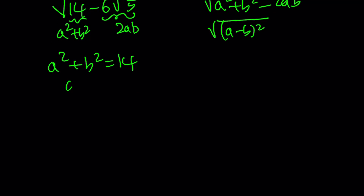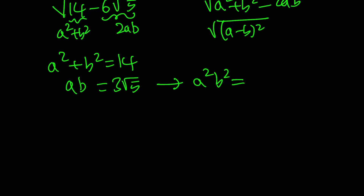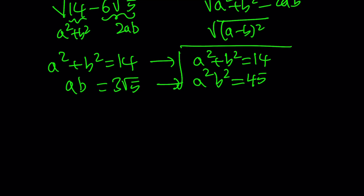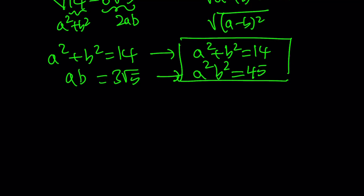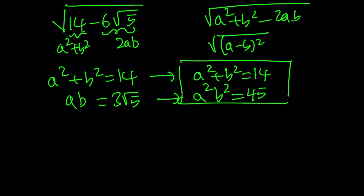Therefore ab equals 3 root 5. From here we can square both sides, and a squared times b squared becomes 9 times 5, which is 45. And we have the sum a squared plus b squared as 14. So we have a system here, and we're going to solve it. It is quadratic, but we can guess and check because we're looking for integers.